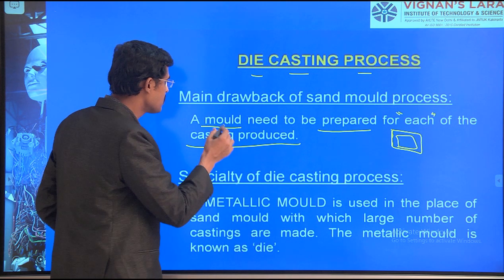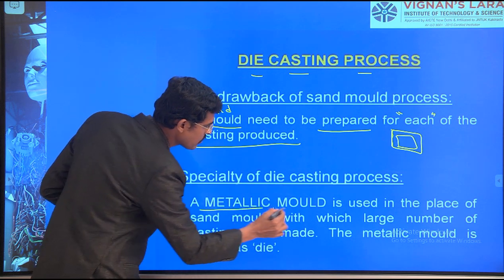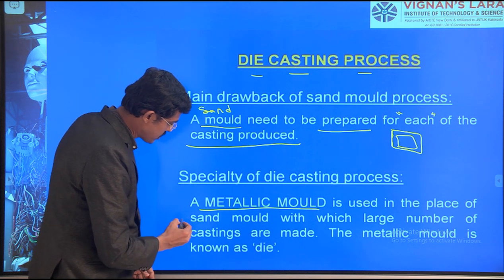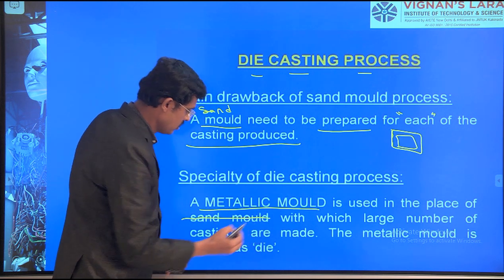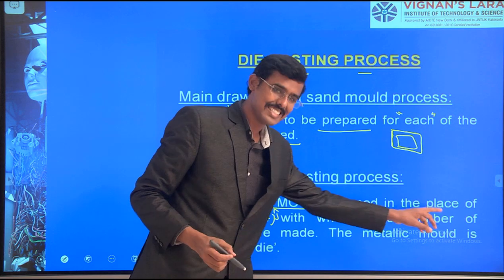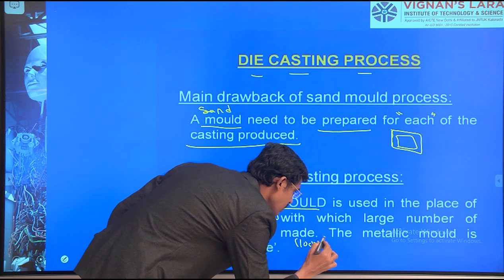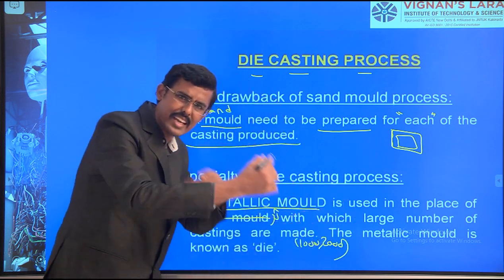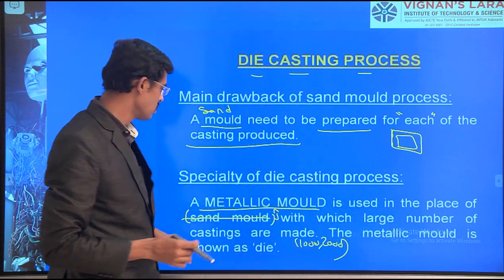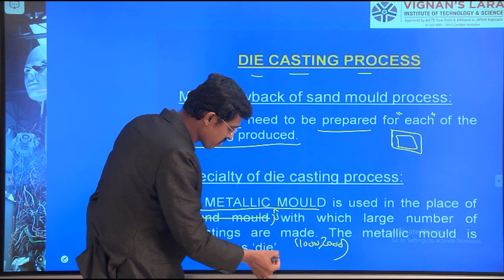In die casting, a metallic mold is used in place of the sand mold, with which a large number of castings are made — a thousand, two thousand, any number on a single box. The metallic mold is known as a die. Instead of sand mold, we are using the metallic mold, which I am naming as a die.